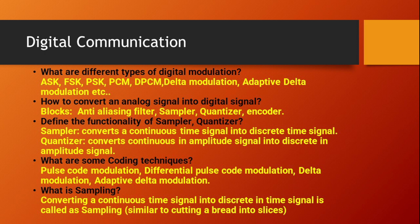What are the different types of digital modulation? The first is ASK, FSK, PSK, PCM, DPCM, delta modulation, and adaptive delta modulation. These are the types of digital modulations. The next question is how to convert an analog signal into a digital signal.